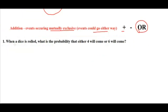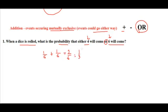Simple example: when a dice is rolled, what is the probability that either four or six will come? The probability that four will come is one out of six, and the probability that six will come is also one out of six. Since we need either of them, we add: one by six + one by six = two by six, or one by three. That is the probability of rolling either a four or a six.